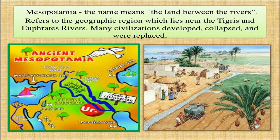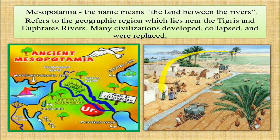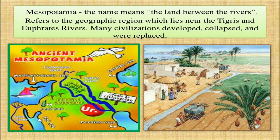Here we can see ancient Mesopotamia. Mesopotamia, the name means the land between the rivers. Here we can see rivers. Mesopotamia means the land between the rivers, referring to the geographic region which lies near the Tigris and Euphrates rivers.